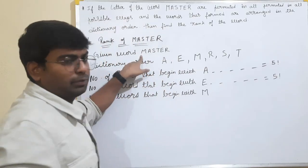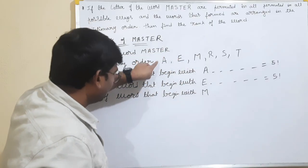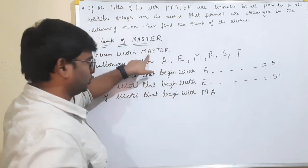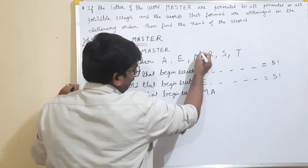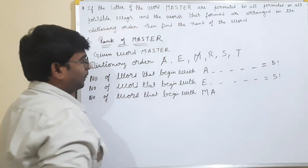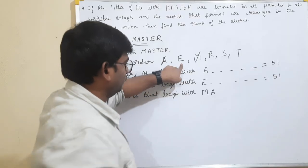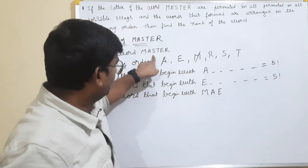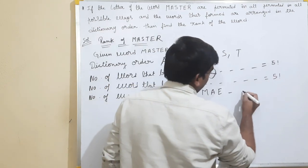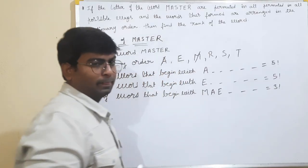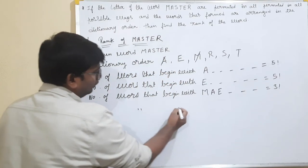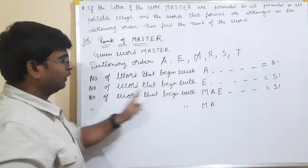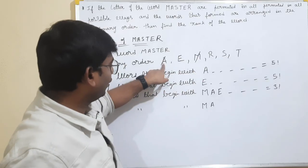If you want to match the word M and M, you will match the word. You will start with the word. Now the second letter will match the word. So, if you want to match the word, you will cross the word. If you want to match the word, you will cross the word and see. M and A match - cross the words will continue. M and A will continue. Cross the words. E and A match - we will write forward.